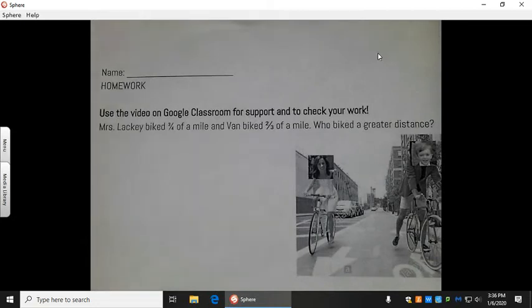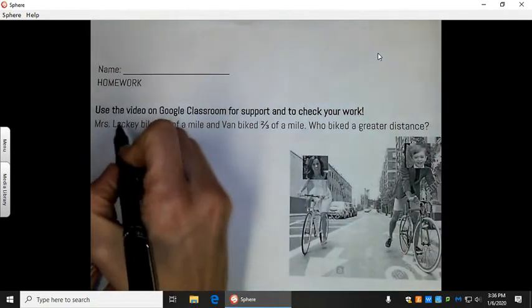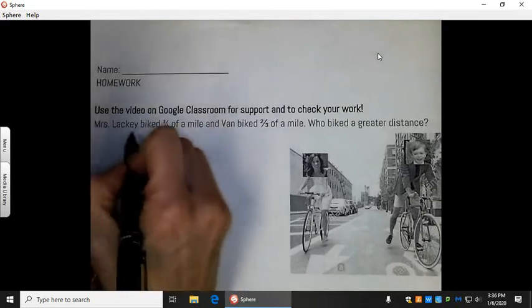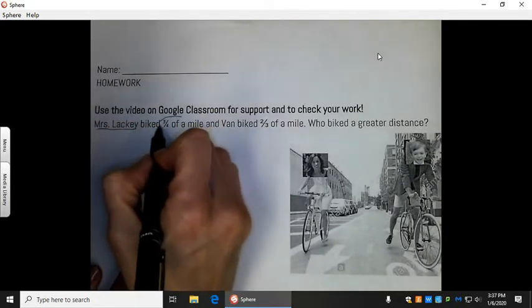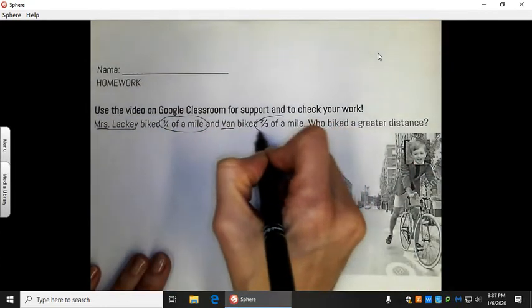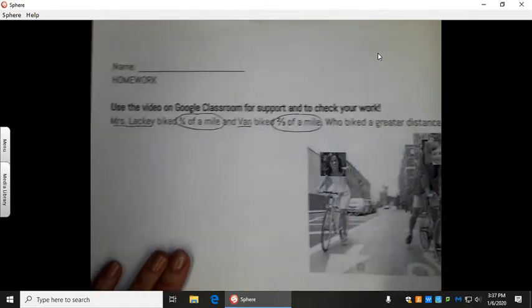All right, for homework, this builds off of the skill that we've done before. It's really comparing fractions. Mrs. Lackey biked three-fourths of a mile, and Van, my son, biked two-thirds of a mile. So, who biked a greater distance?